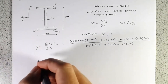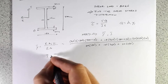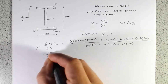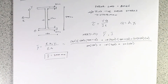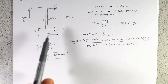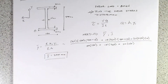Working all of that out, we get y-bar equals 200 millimeters. As a quick sanity check: we have a doubly symmetric section, so the centroid should be right in the middle at 200 mm — which makes sense. Because we're symmetric about the Z axis, the centroid is at 200 millimeters.